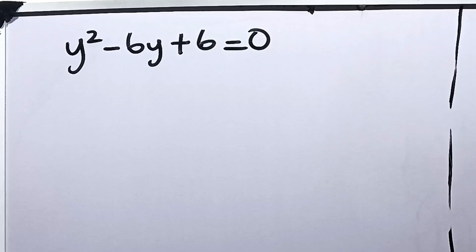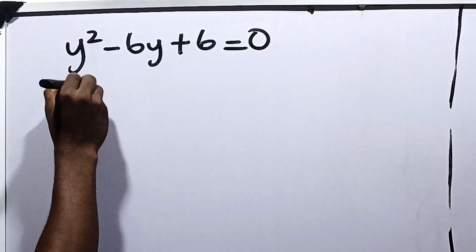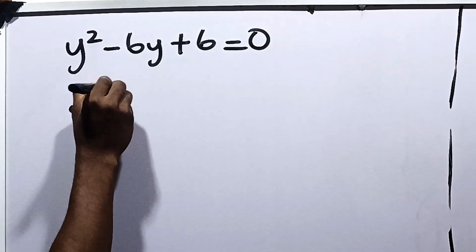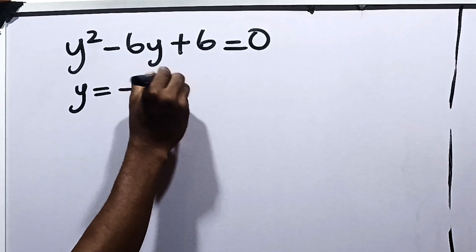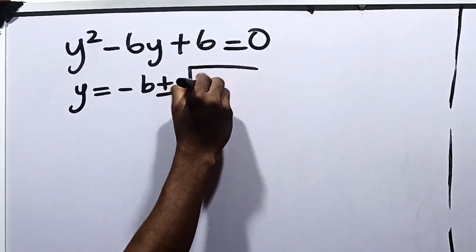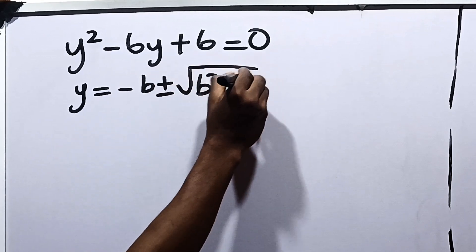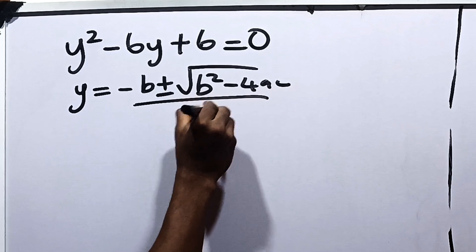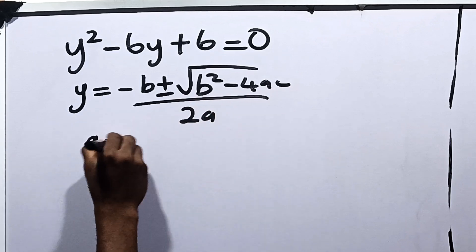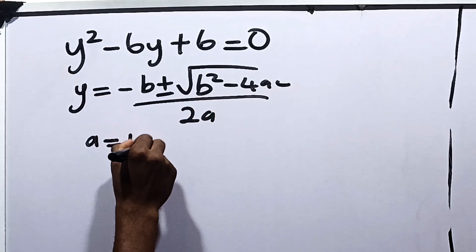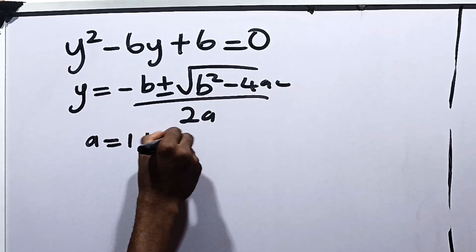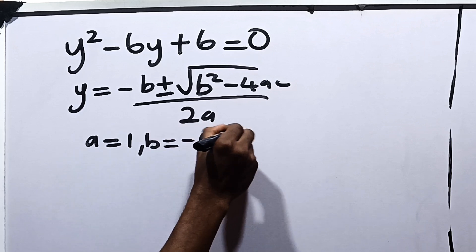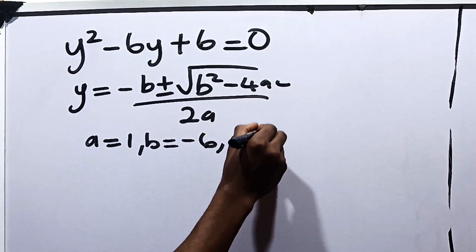Moving on from here, we can use the quadratic formula to solve this. We have y equal to minus b plus or minus square root of b squared minus 4ac, all over 2a. Where a is equal to 1 (the coefficient of y squared), b is minus 6 (the coefficient of y), and c is equal to 6.